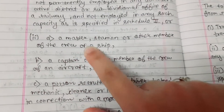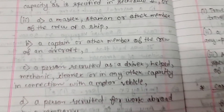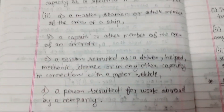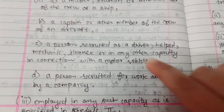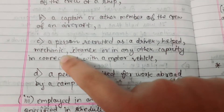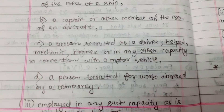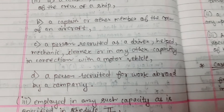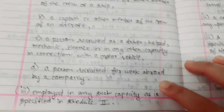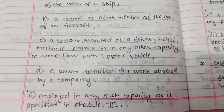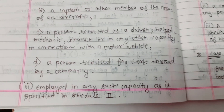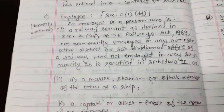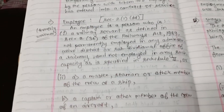seaman, or other member of the crew of a ship, a captain or other member of the crew of an aircraft, a person recruited as a driver, mechanic, cleaner, or in any other capacity in connection with a motor vehicle, a person recruited for work abroad by a company, then employed in any such capacity as is specified in Schedule 2. This is the definition of the employee.